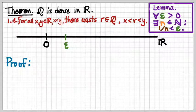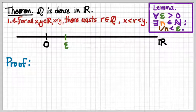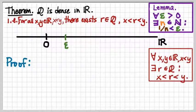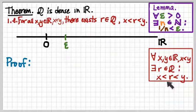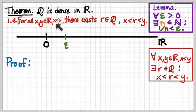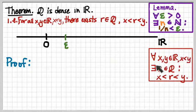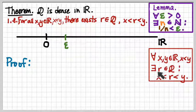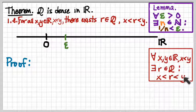This also exposes the logical structure of the claim we're making. For all real numbers x and y with x less than y, there exists a rational number r such that x is less than r, which is in turn less than y.